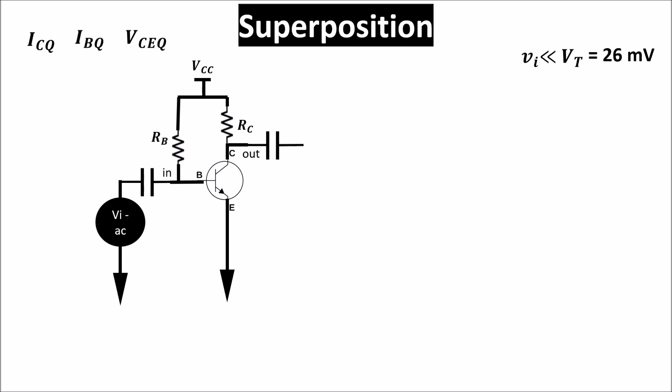So in a linear circuit we can apply superposition and analyze the DC contribution apart from the AC contribution. When we analyze the DC contribution we put all the AC current sources as open circuits and all the AC voltage sources as short circuits. So in the DC analysis the circuit becomes this and we find the quiescent point.